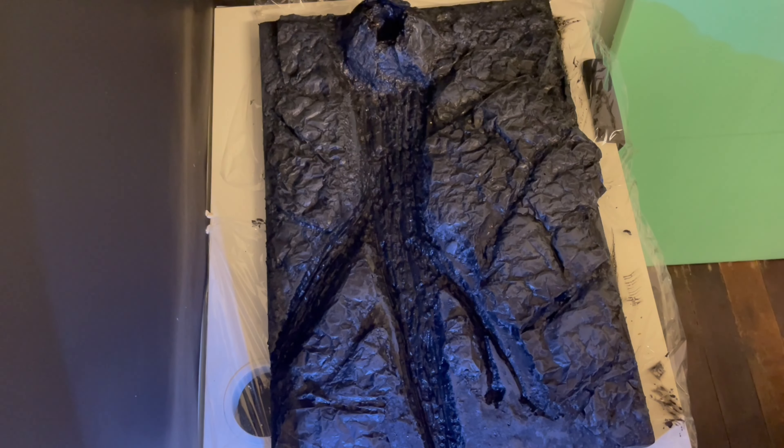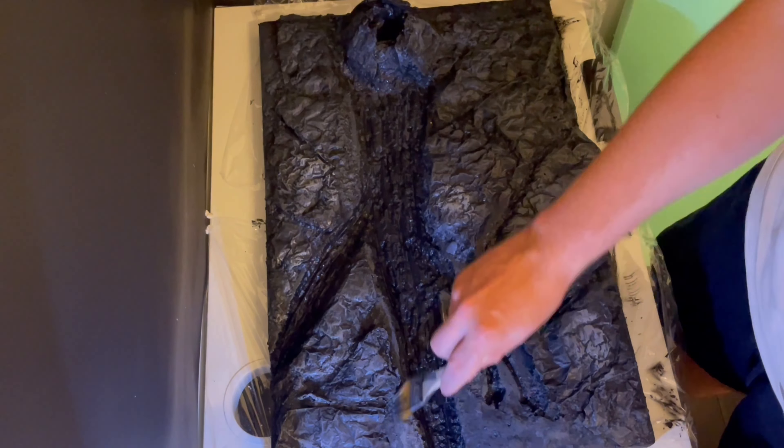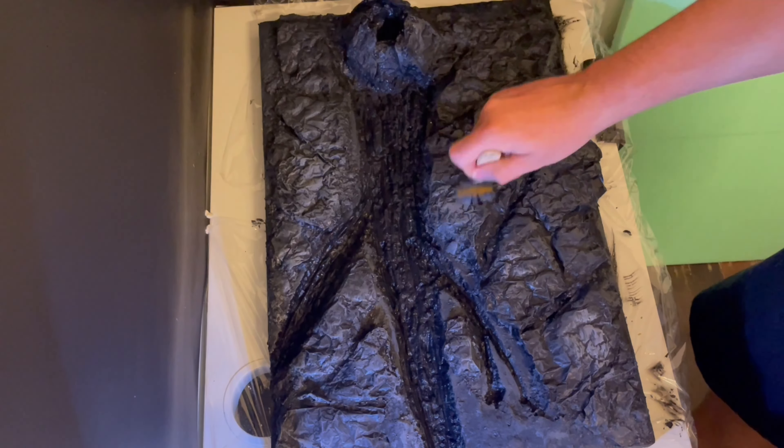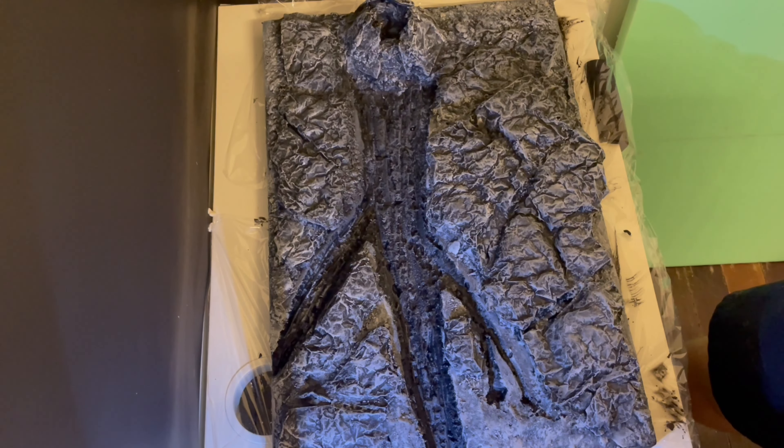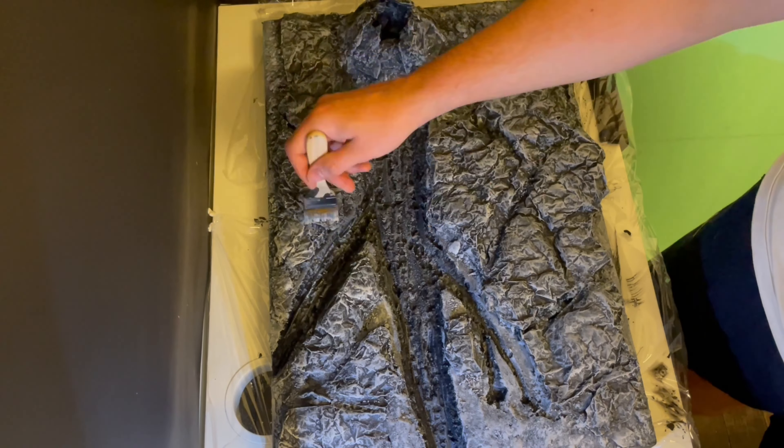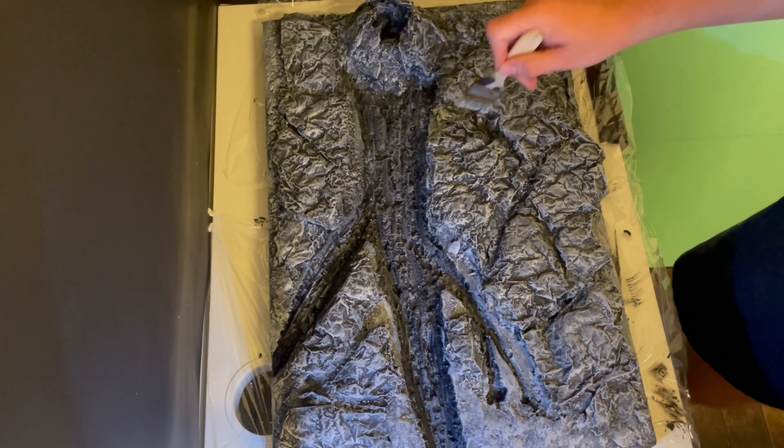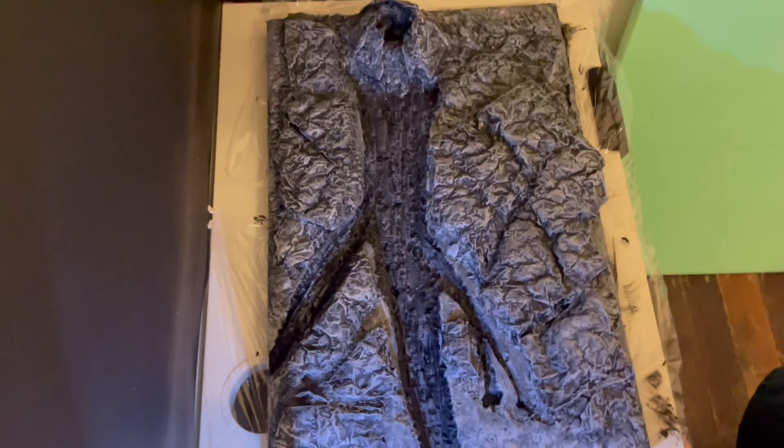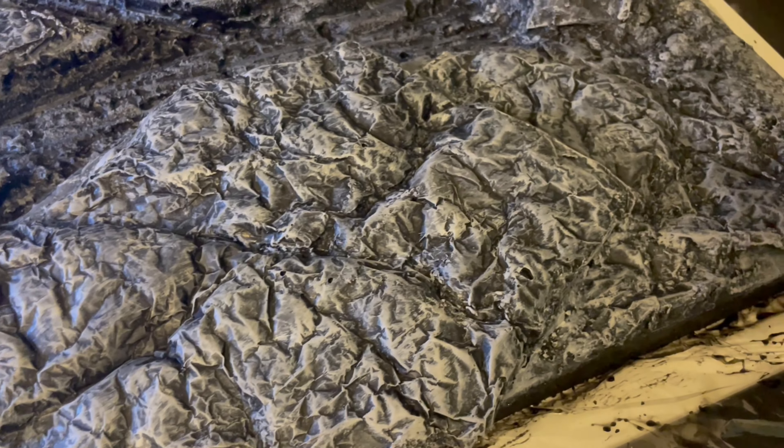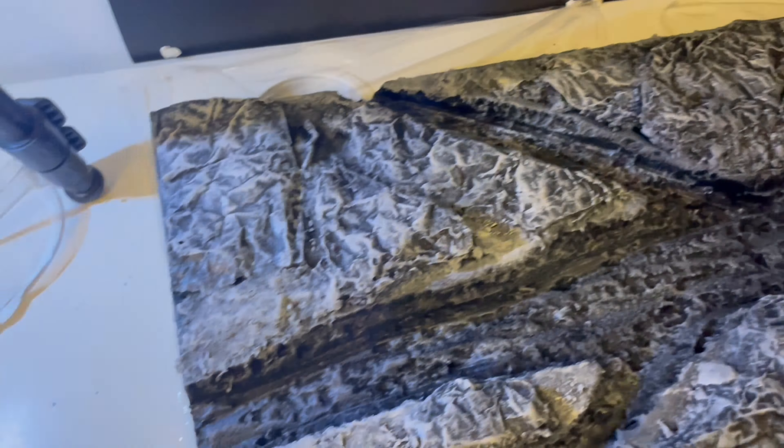And now it's time to start the dry brushing. So I tend to do four or five layers, starting with a really dark grey and slowly building up to a nice light, kind of off-white color to bring out the ridges and the light reflection from the rocks. Really happy with the way that the rocks are looking so far.